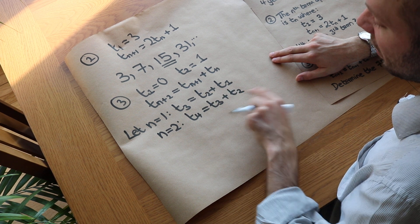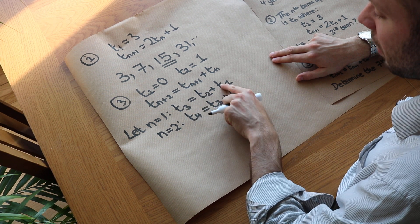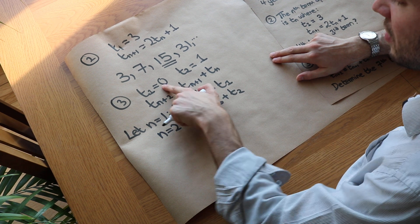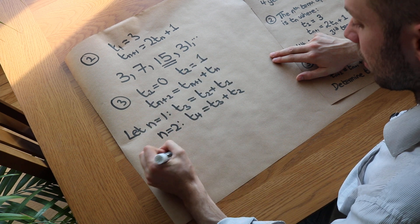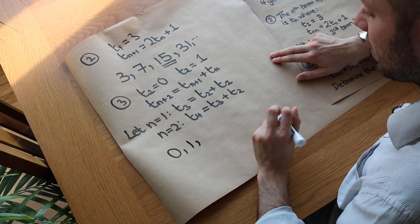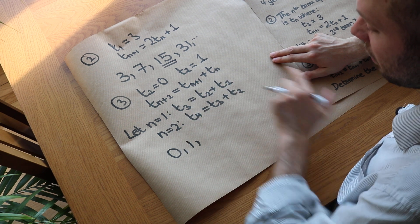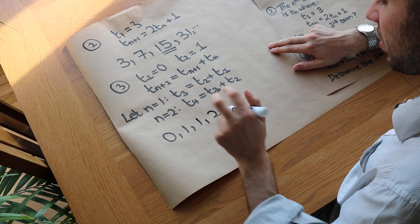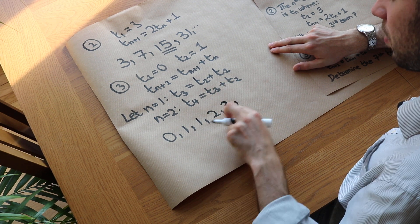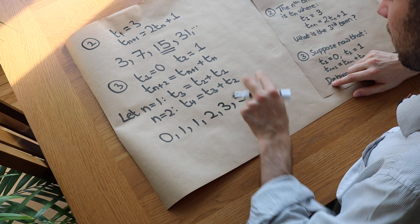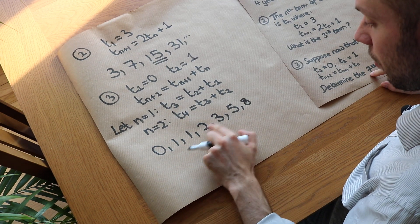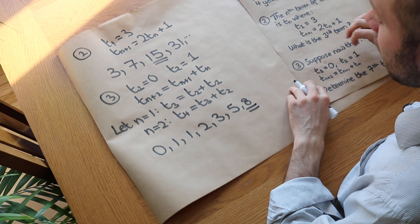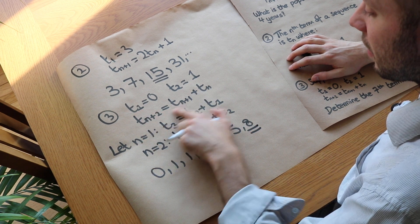The pattern is clear: each term is the sum of the previous two terms. Starting with 0 and 1: 0, 1, then 0+1=1, 1+1=2, 1+2=3, 2+3=5, 3+5=8. Counting the terms — 1, 2, 3, 4, 5, 6, 7 — the seventh term is 8.